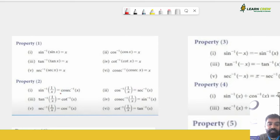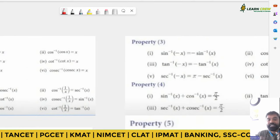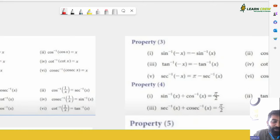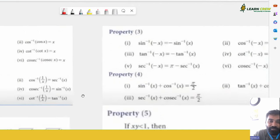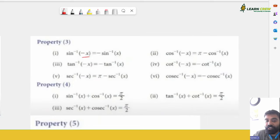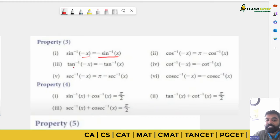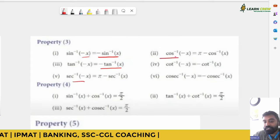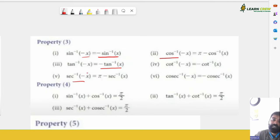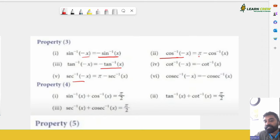Property 3: sin inverse(−x) = −sin inverse(x), tan inverse(−x) = −tan inverse(x). But for cos inverse and sec inverse, the negative gives π minus the value: cos inverse(−x) = π − cos inverse(x), sec inverse(−x) = π − sec inverse(x). The same applies to cot inverse. Property 4 (very important): sin inverse(x) + cos inverse(x) = π/2, tan inverse(x) + cot inverse(x) = π/2, sec inverse(x) + cosec inverse(x) = π/2.